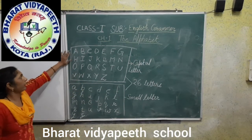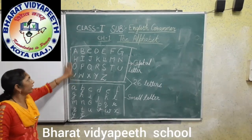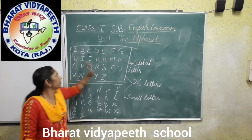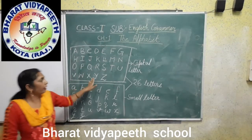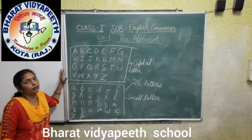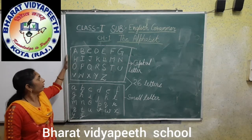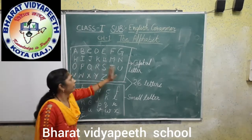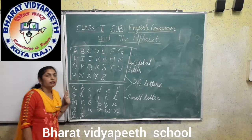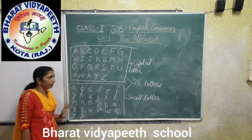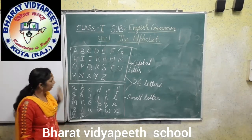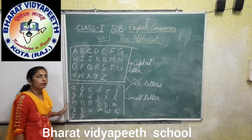You can see that I will write the alphabet: A, B, C, D, E, F, G, H, I, and so on through Y, Z. This is the capital letter alphabet. We will call it capital letters. Also I will write the small letter, which is called small letter. This is called capital letter and this is called small letter.